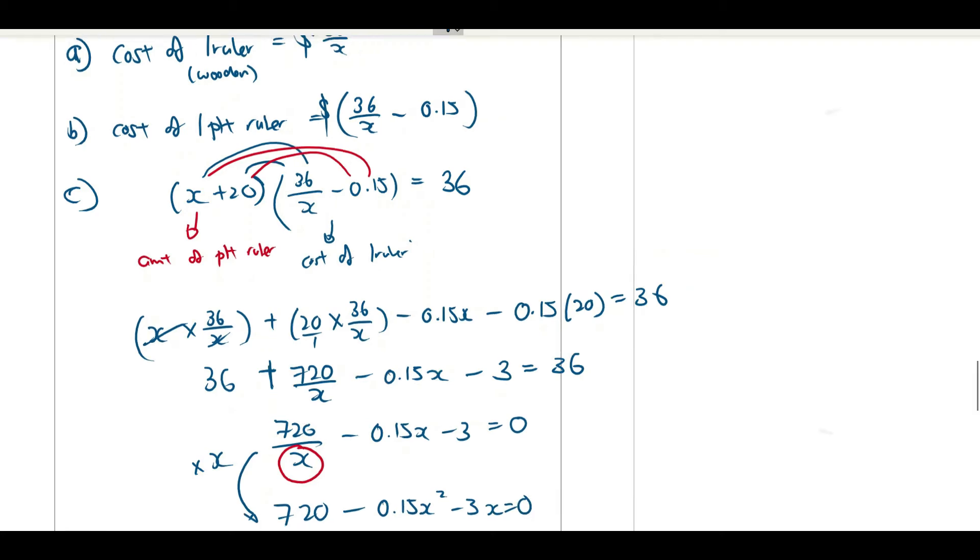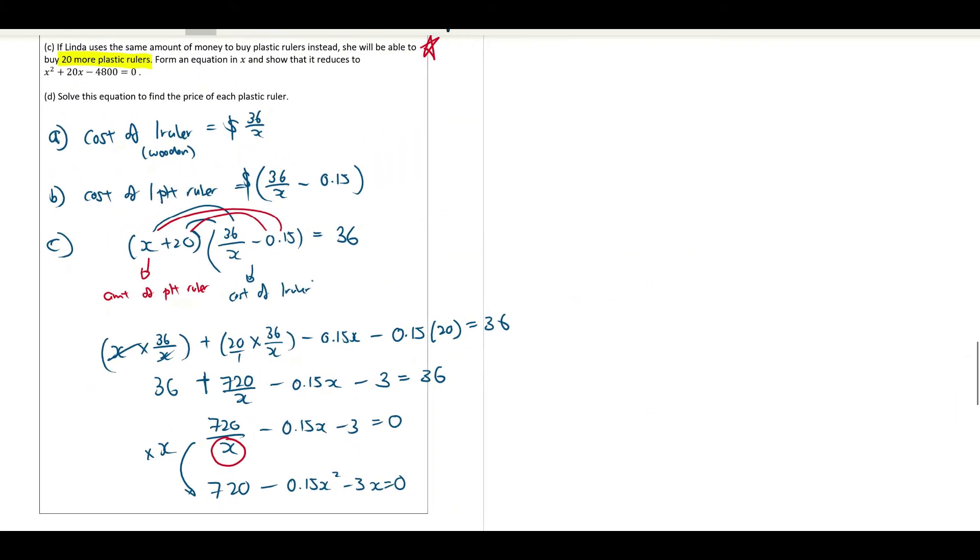720 minus 0.15X square minus 3X equals to 0. Put it nicely all to the right side, which is because you see my X square is negative 0.15X square. I want it to be positive.